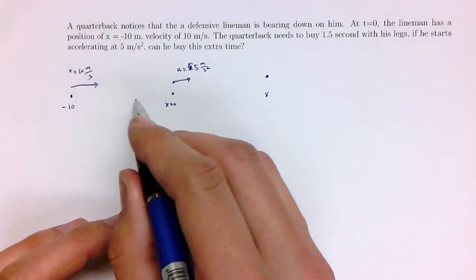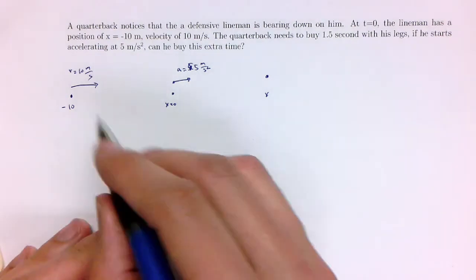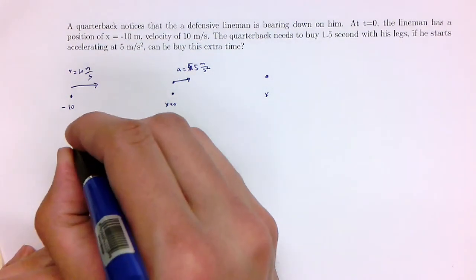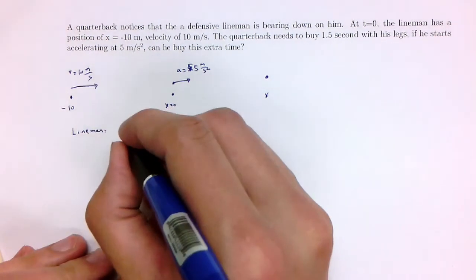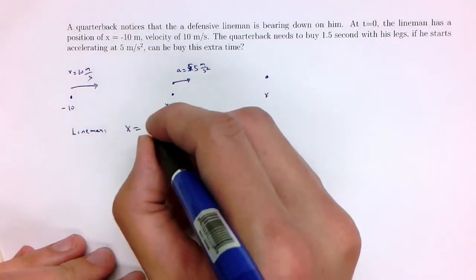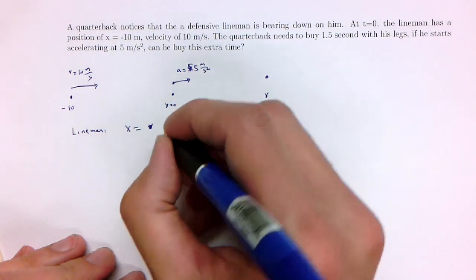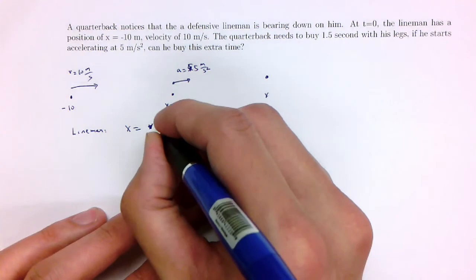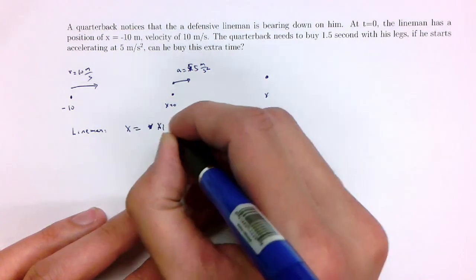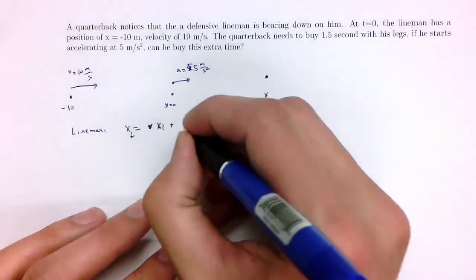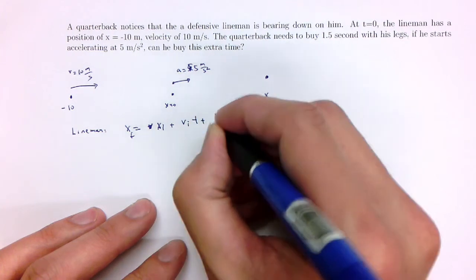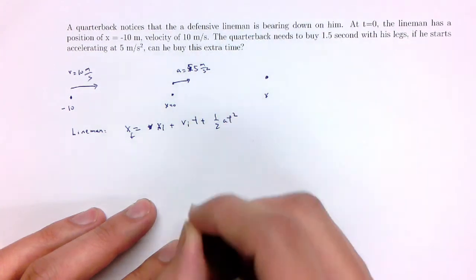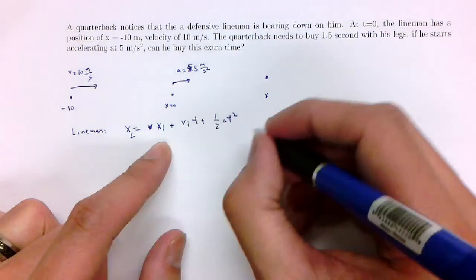Let's write the equation for the position of the lineman. So the lineman, x is equal to, well let's see. The initial position is going to be x initial, plus let's write the full equation down first, v initial t plus one-half a t squared. What is the initial position?